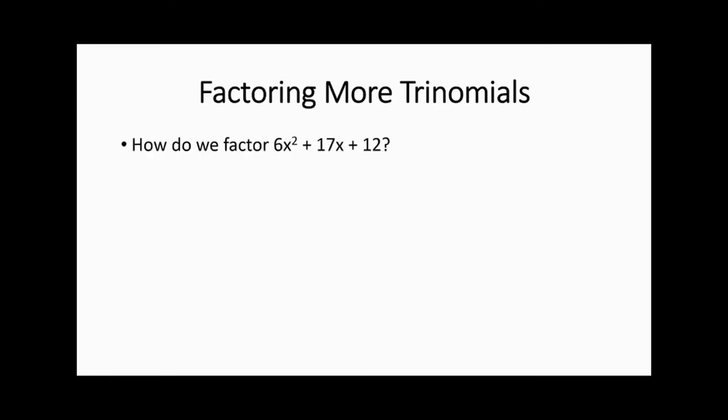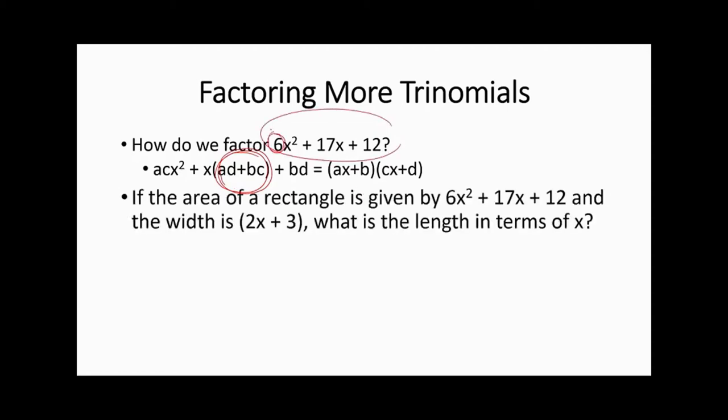Factoring more trinomials. How do we factor 6x squared plus 17x plus 12? This is a simpler case in a way because we have only addition and no negative numbers. In general, the formula looks very complicated — and I don't recommend memorizing any factorization formula. The linear coefficient is the one that throws people off when the quadratic term is not 1.